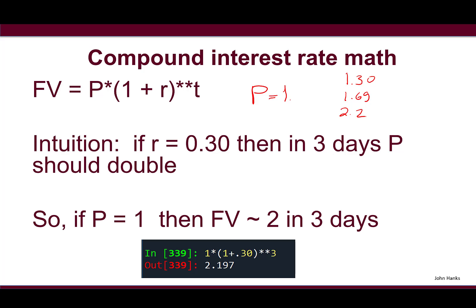I went into IPython and coded that up with the IPython console - started with P = 1, here's my interest rate, and here is three days. We're getting about 2.2 in three days, exactly what our intuition is telling us.